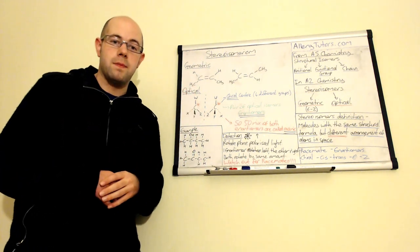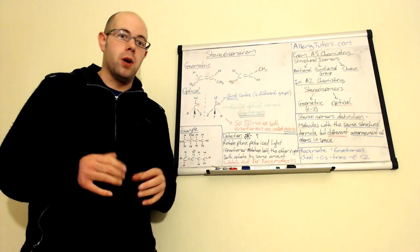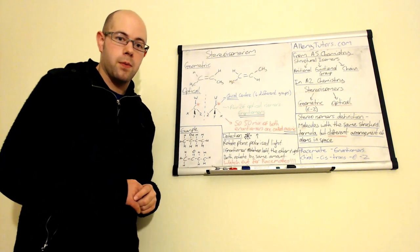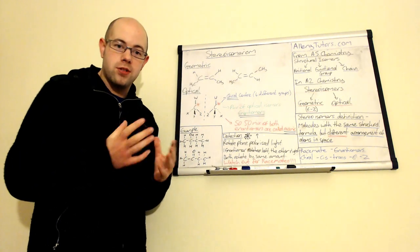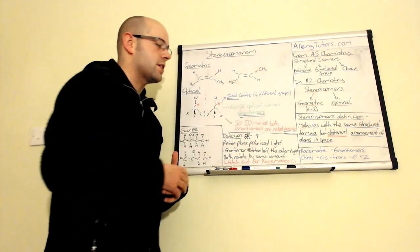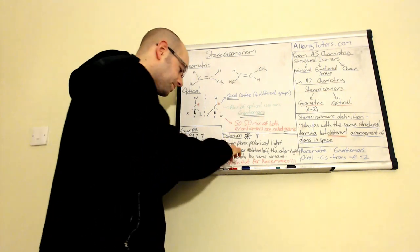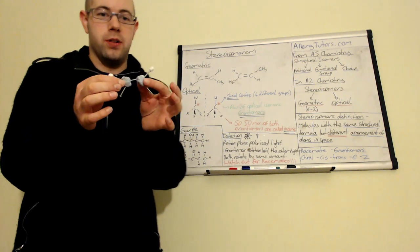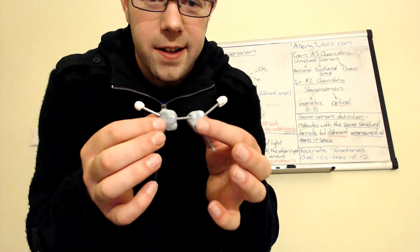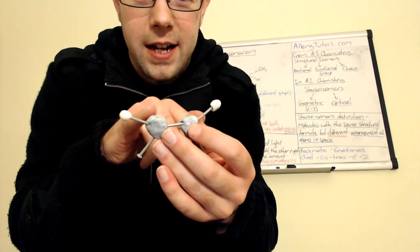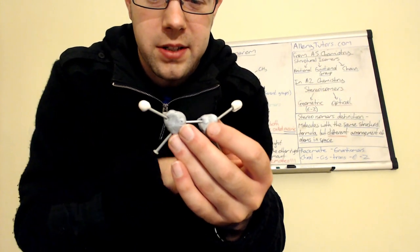So it's actually where the atoms are positioned that makes a difference. We're going to look at the two types and I'm going to try and explain it using a model. We'll start with geometric first. Now geometric is also known as E-Z or cis and trans. So we have, imagine if we've got a molecule, here's my simple model here, it's just bits of blue tack and nails.